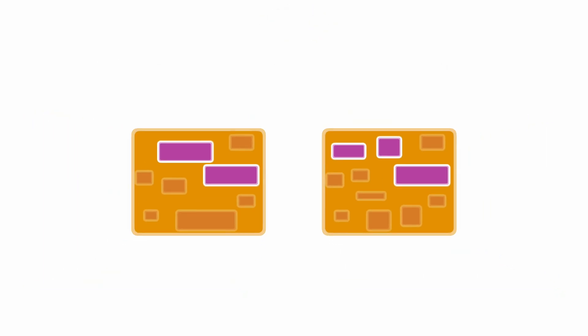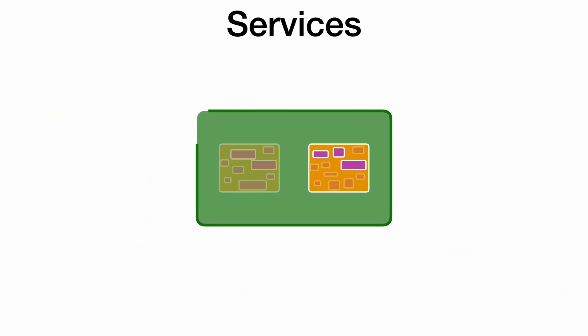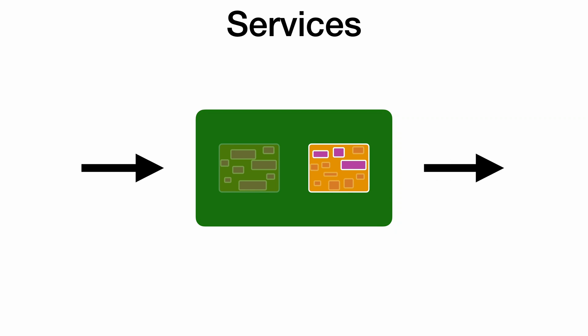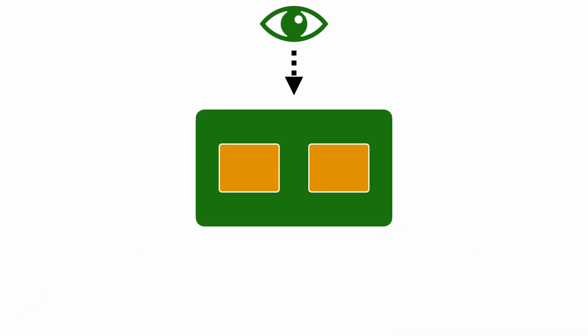Zooming out from this level brings us to services or microservices — an independently deployable application. Now suddenly these arrows crossing the boundaries represent a network call. Going over this boundary has its downsides. We've introduced latency and we've added a potential failure point if the network fails. But it's all trade-offs. Now we host the functionality ourselves and we can roll out updates whenever we like. As long as we don't break that public API contract then we should be fine.